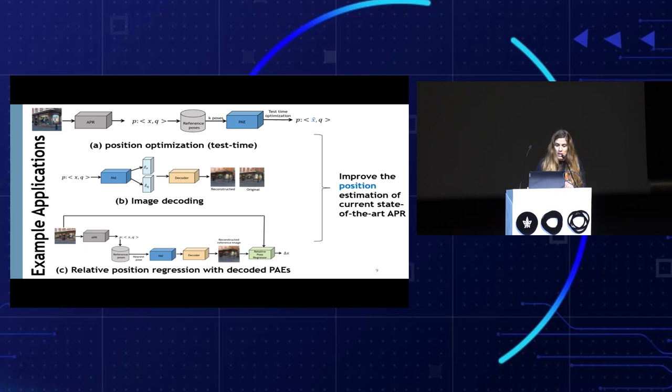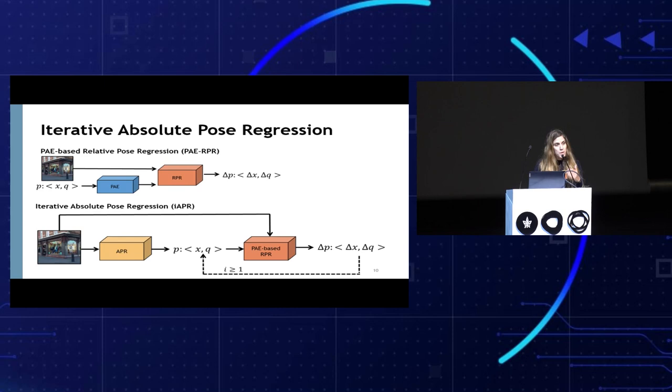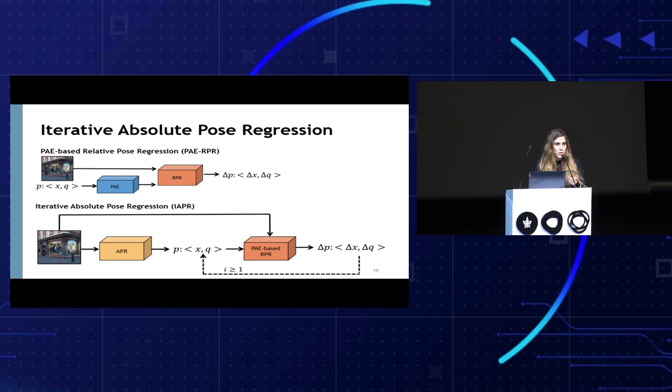We first showed some example applications of how we can use PAEs to introduce priors and improve position estimation — for example, test optimization or image decoding. Importantly, we propose a new localization class called Iterative Absolute Pose Regression, or IAPR. It combines absolute pose regression with PAE-based relative pose regression. Given a query image, we first apply the APR to get a pose estimate, then use a PAE-based RPR to compute the relative motion from the first estimate and the query, refining it iteratively.